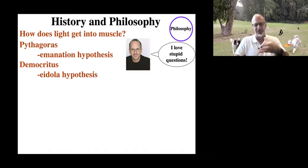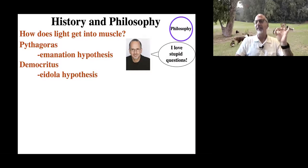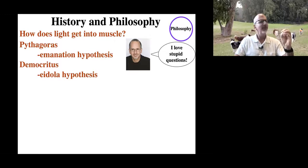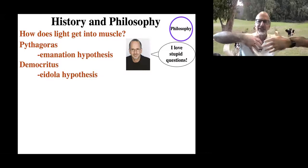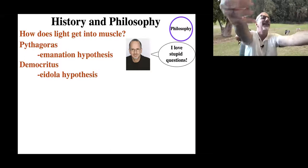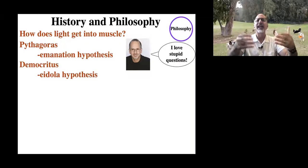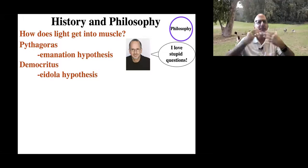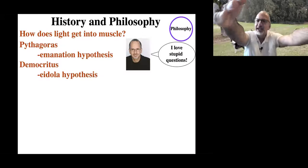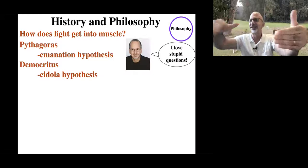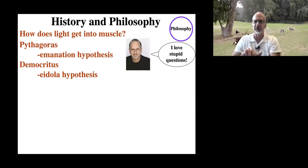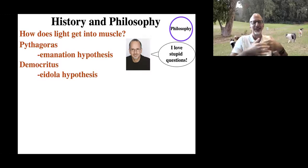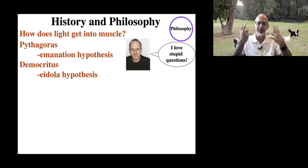We know that light doesn't come from the eyes — it comes from the sun, candles, and light bulbs. But one feature of the emanation hypothesis that was kind of maintained through modern history was the idea that as these little messengers came back to the eyes, they were carrying information that were copies of the world. The emanation has to do with going out from the eyes, and on its return, whatever little devices were involved carried copies of the things in the world. Those copies came back to the eyes and were then interpreted by the body — or as we would think of it, the brain.